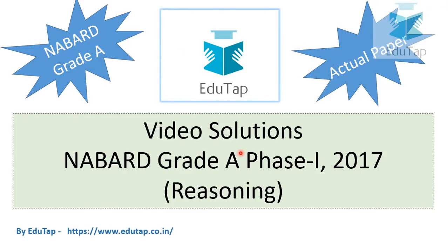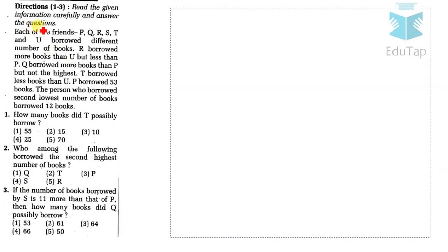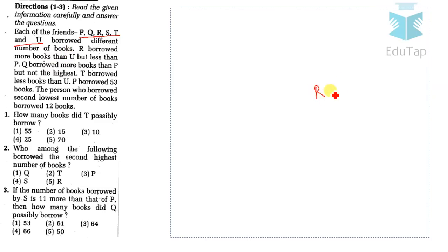Let's start. Directions for questions 1 to 3: Each of the friends P, Q, R, S, T and U borrowed different numbers of books. R borrowed more books than U but less than P, so R is between U and P in the ordering.